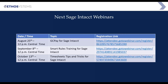That is everything that has changed within R3 of Sage Intacct. Please note that we have some additional webinars coming up. On the 25th we have GC Pay for Sage Intacct — the link is here to sign up for that webinar — as well as Smart Rules, and then timesheet tips and tricks. Take note of these webinars and make sure you sign up so you don't miss any of this excellent information.